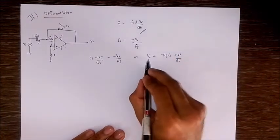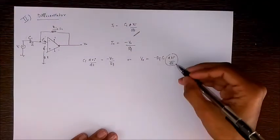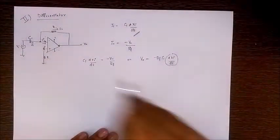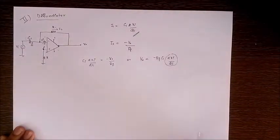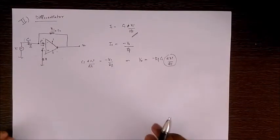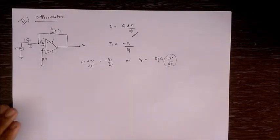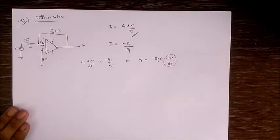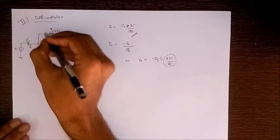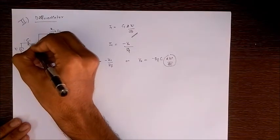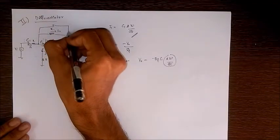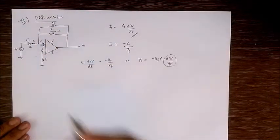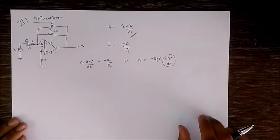So V0 equals minus RF times C1 times dVI by dt. That is, the output voltage is proportional to the derivative of the input. This is our differentiator — make sure not to confuse this with the difference amplifier studied in the previous module. To avoid practical disadvantages, we normally connect a resistor in series with the capacitor and a capacitor in parallel with the feedback resistor. This gives us the practical differentiator circuit.